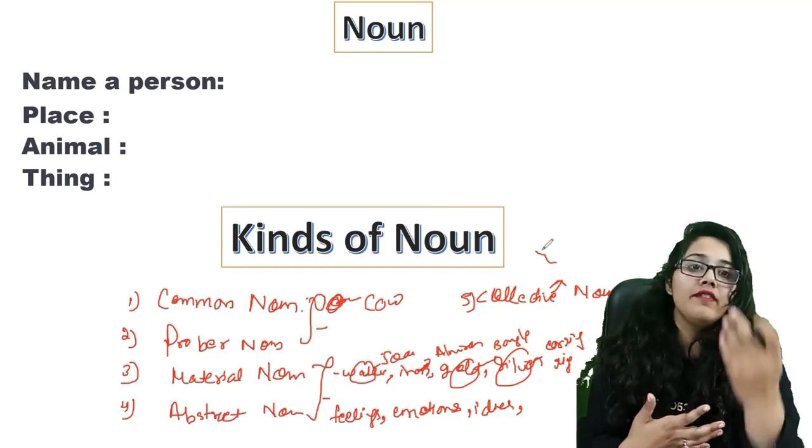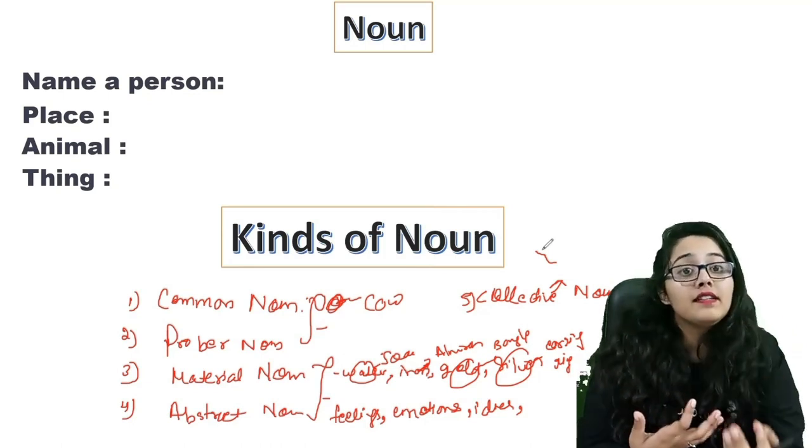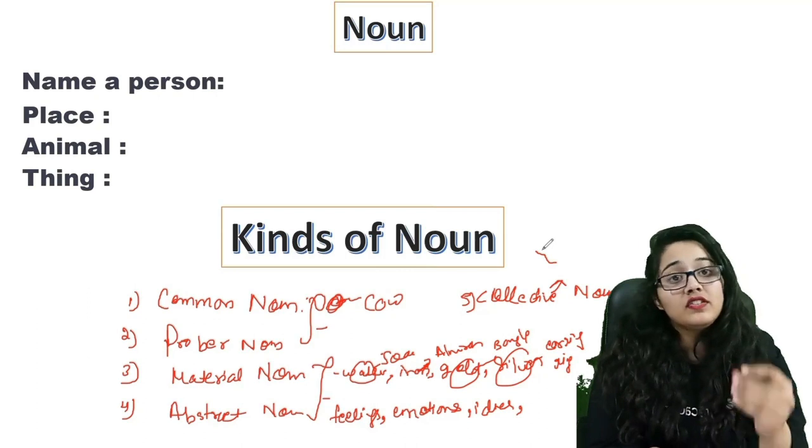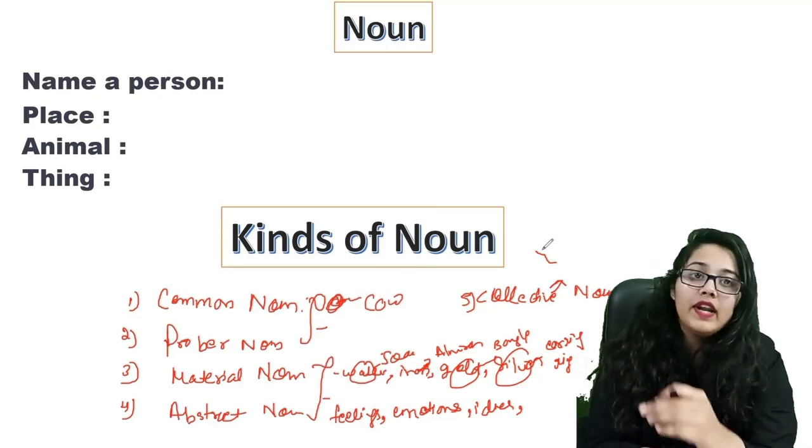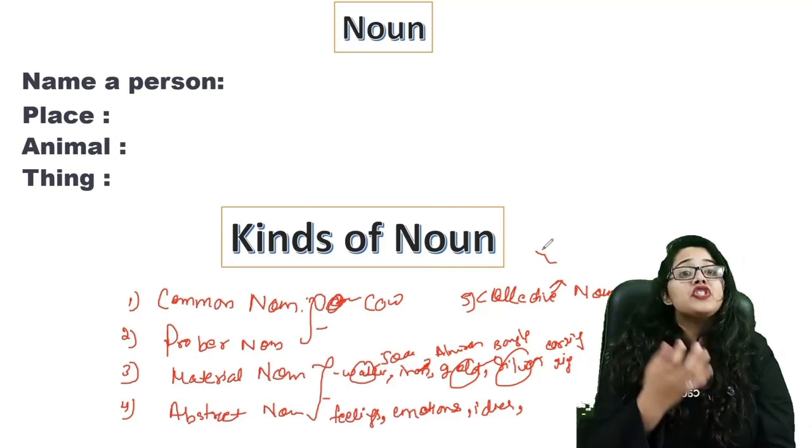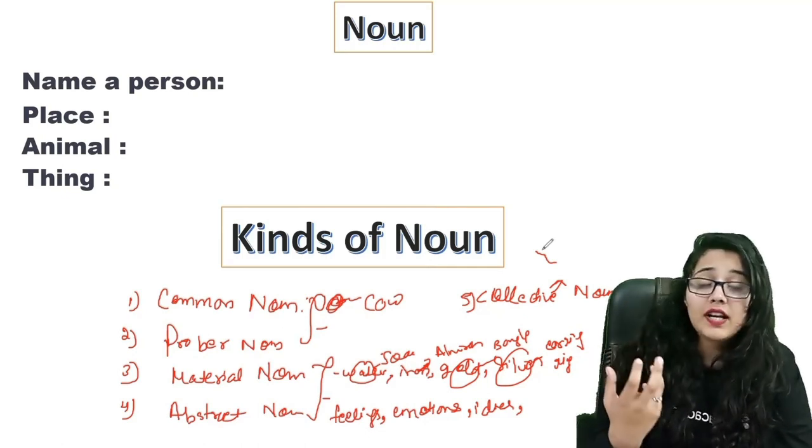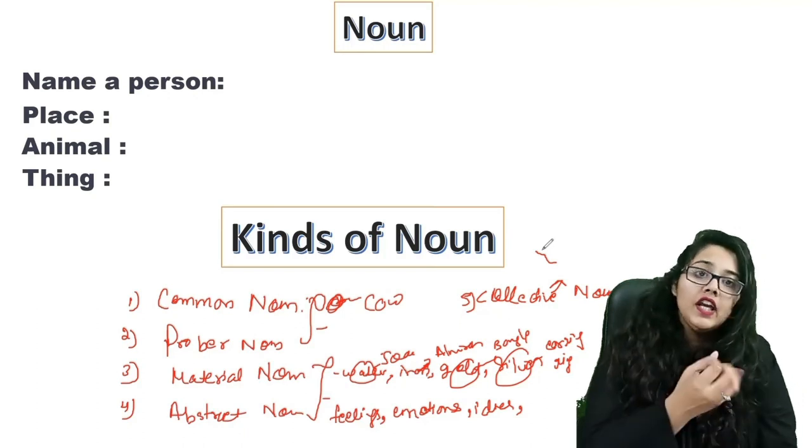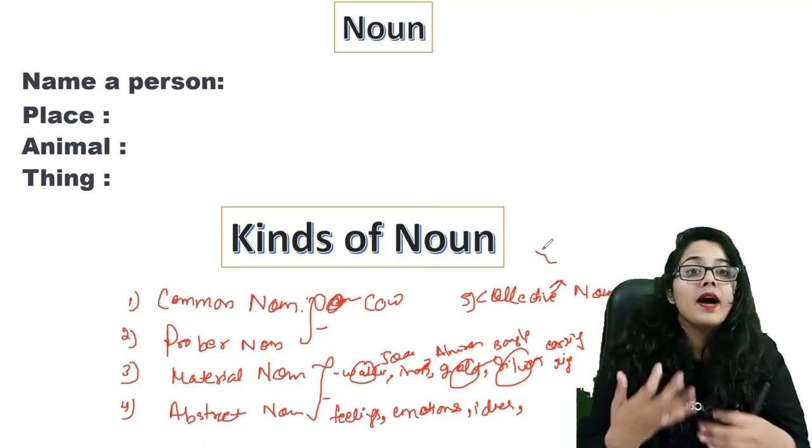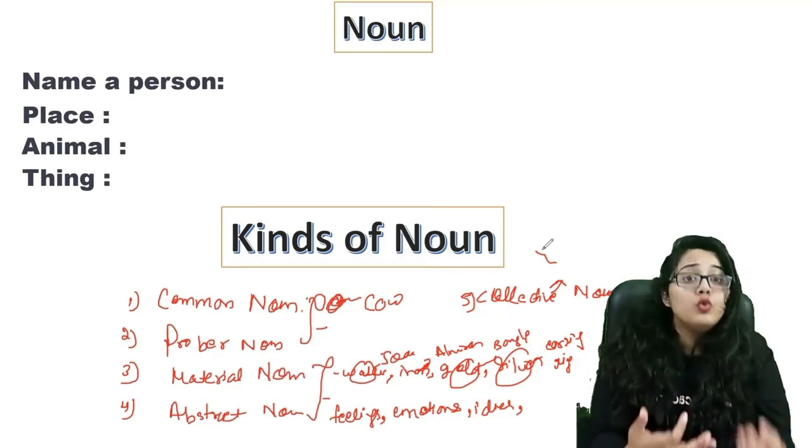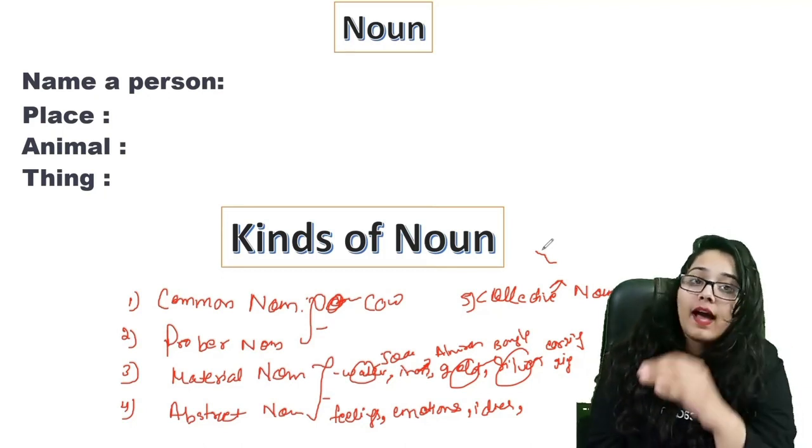Now this is more divided on the basis of counting: countable and uncountable noun, which we can count is countable noun, and which we can't count is uncountable noun. Next is gender basis: feminine and masculine. This is female and this is male. We will discuss further details in the next video. We will discuss rules which we will see in our examination.